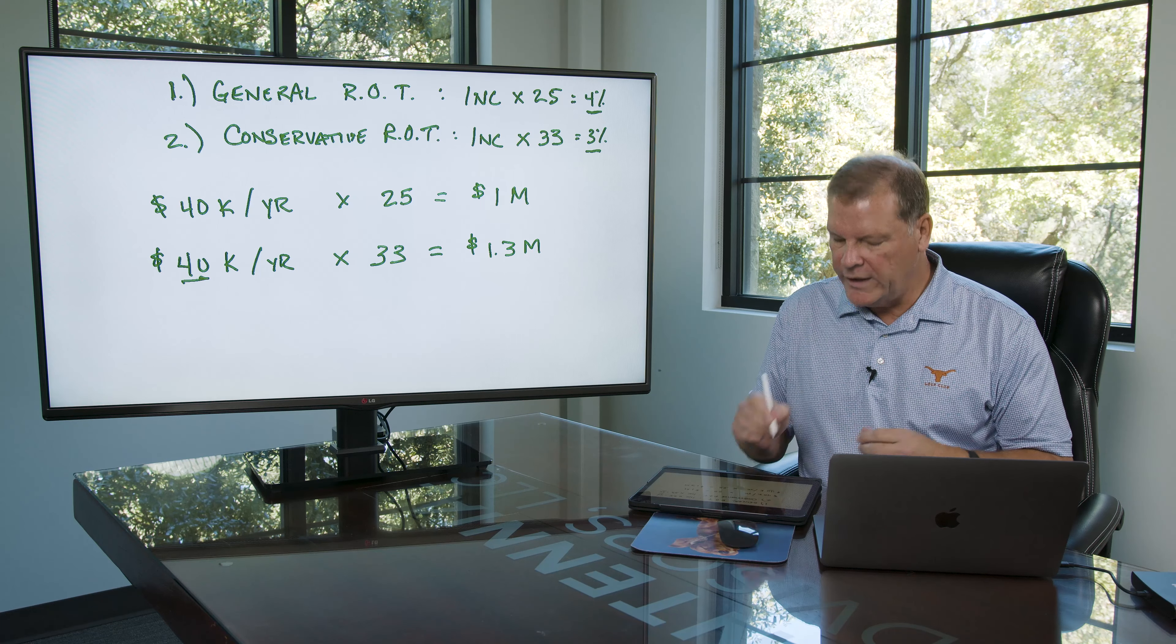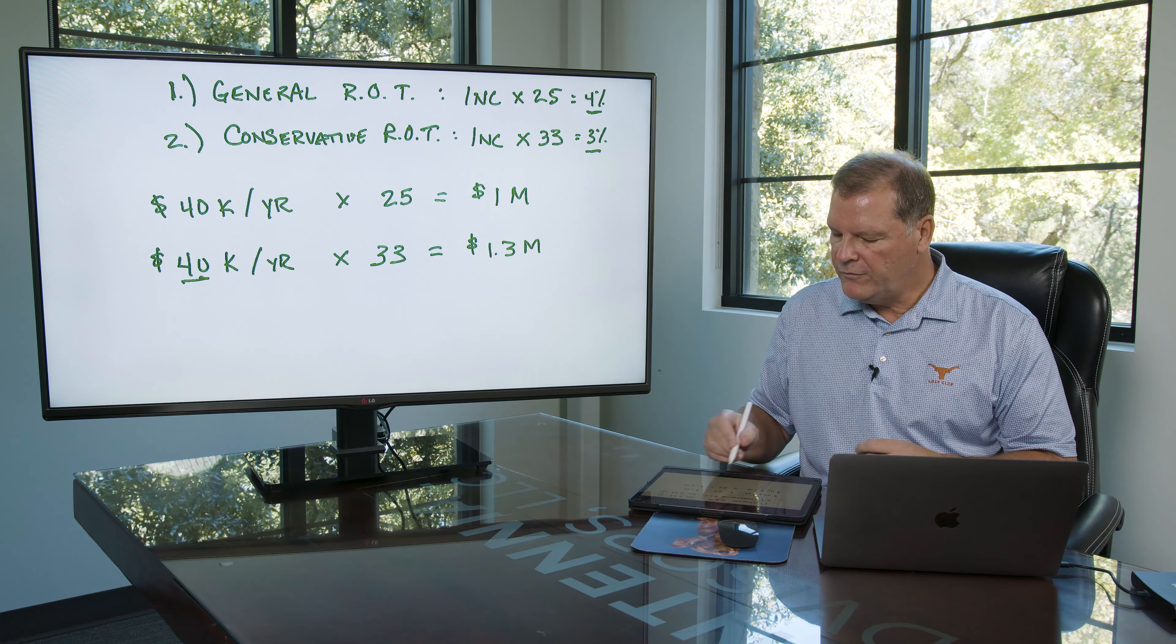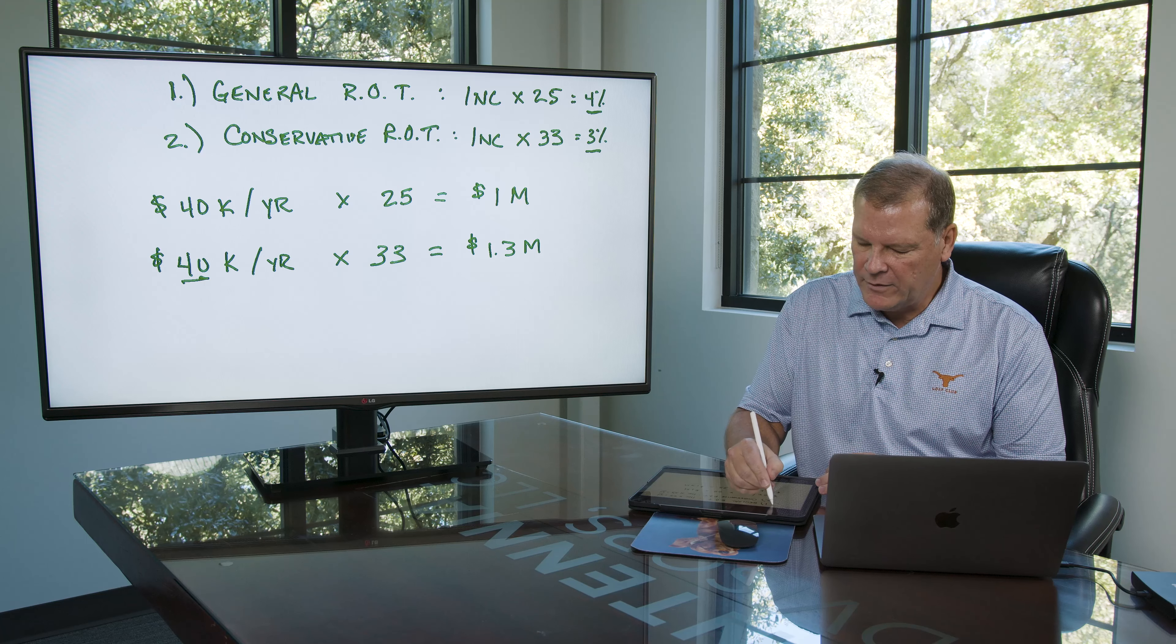But if you take this times 3%, guess what you get? The same $40,000. General rule of thumb, 4%—that's that one right here.